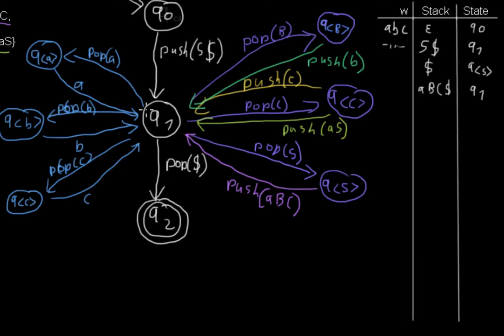Now we can follow this transition. We read the a from the input string going to qa.